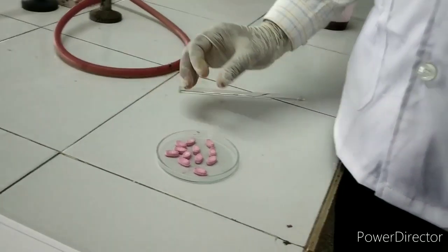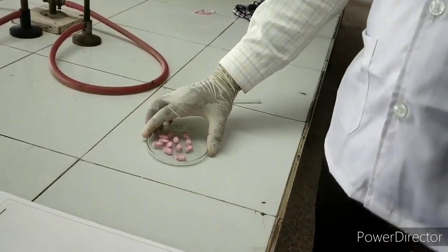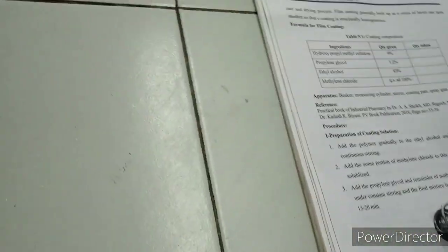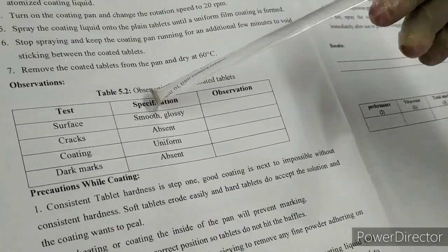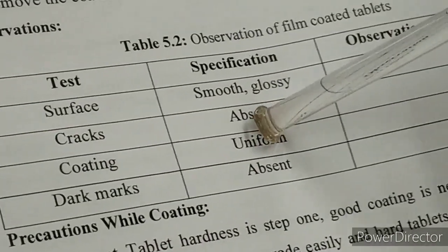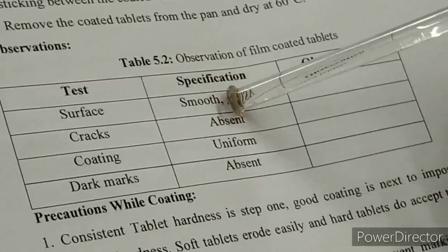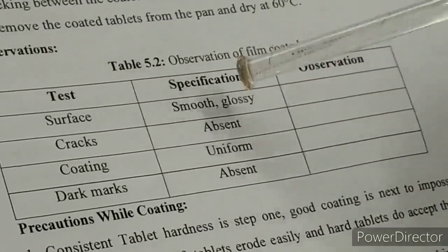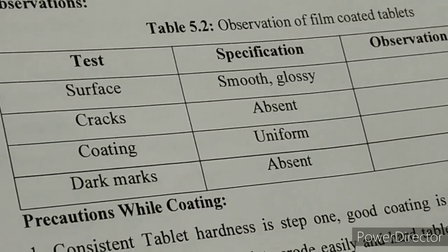In this way we can coat the tablet and finally the coating becomes like this. Now we will evaluate this coating for parameters such as surface — standard specification: surface should be smooth, cracks should be absent, coating should be uniform and even. Dark marks — standard specification is absent. We can write our observation and compare with the specification. The important thing is that our observation must match the specification. Then and then only, the tablet coating evaluation complies with all the mentioned parameters.